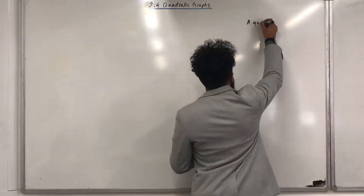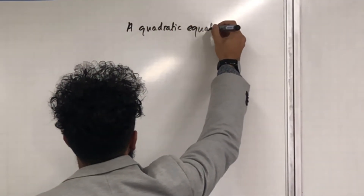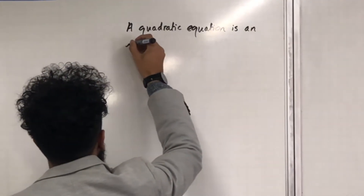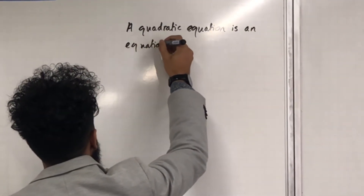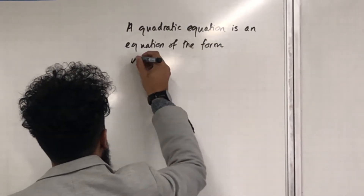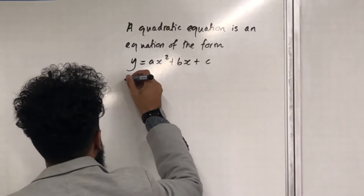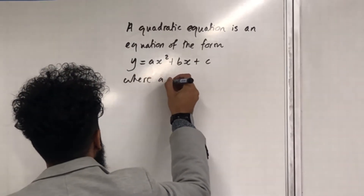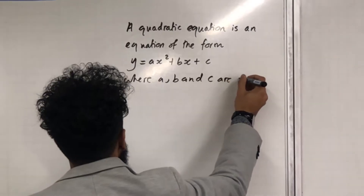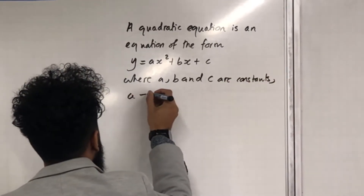A quadratic equation is an equation of the form y = ax² + bx + c, where a, b, and c are constants, and a is not equal to 0.